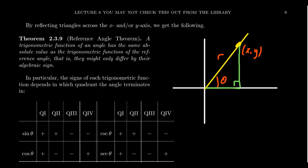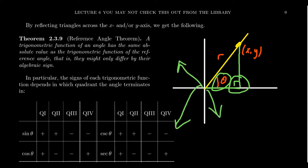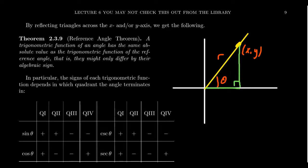But the right triangle approach has what seems like an obstacle: the angle sum of a triangle can never exceed 180 degrees, and if there's a right angle, that accounts for 90 degrees, so the angle theta must be acute. You can't get something obtuse — like an angle that terminates in the second quadrant or anywhere else. But this idea of a terminal point works there as well, so it feels like the right triangle approach is limited.